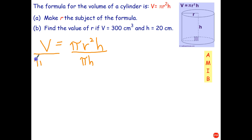Even though they're not written next to each other, that doesn't matter because the order in which we multiply things doesn't make any difference. So the π's divide out, the h's divide out, and that leaves me with just r² = V/(πh).